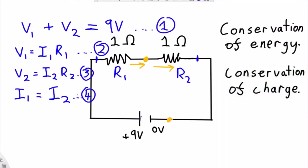So, now I have a series of four equations. I can use all these equations together to find the current that's flowing through the circuit. So, first of all, I'm going to substitute equation 2 and equation 3 into equation 1. So, that will give me...